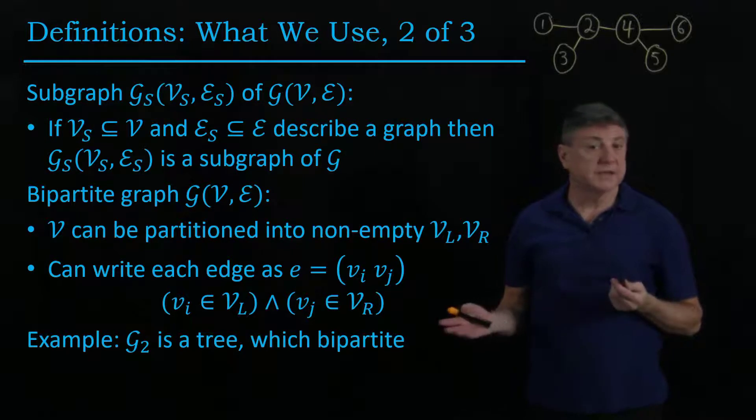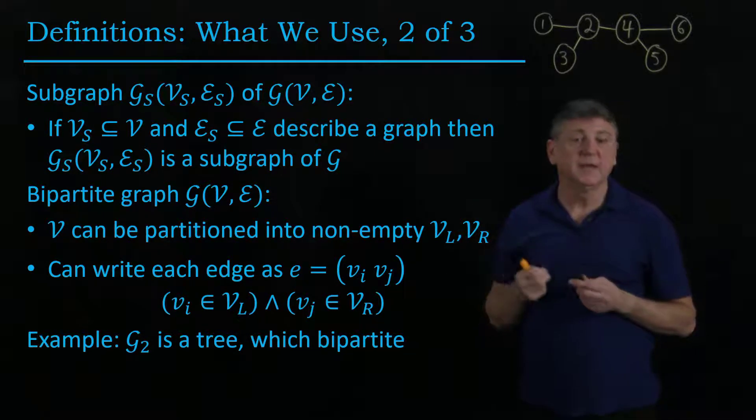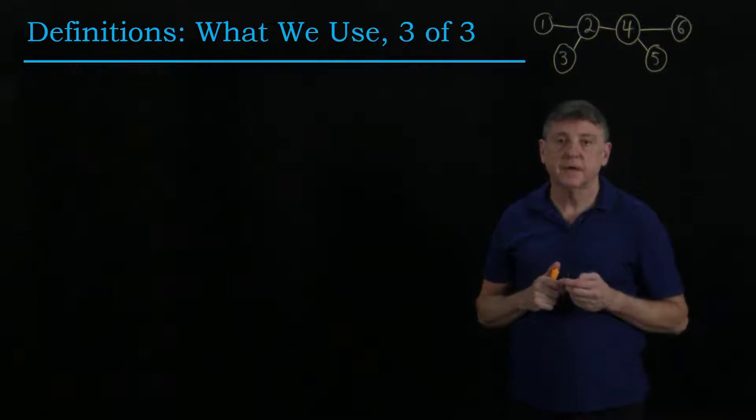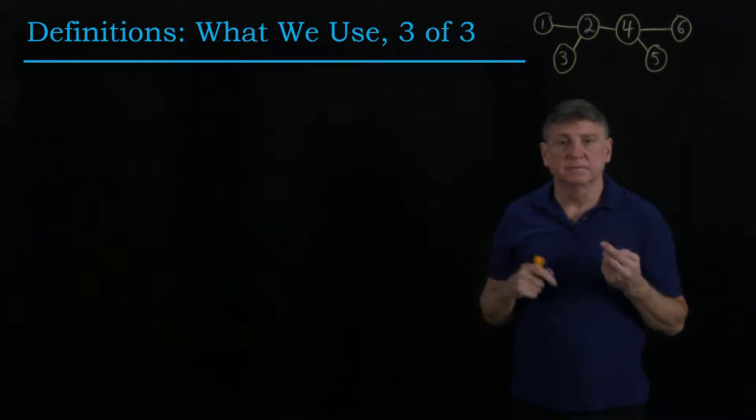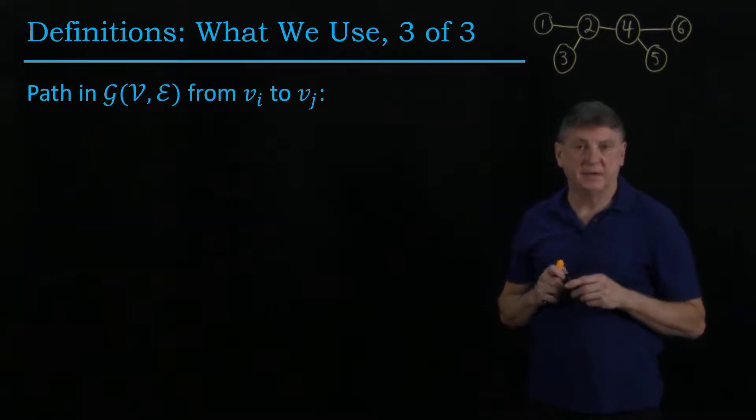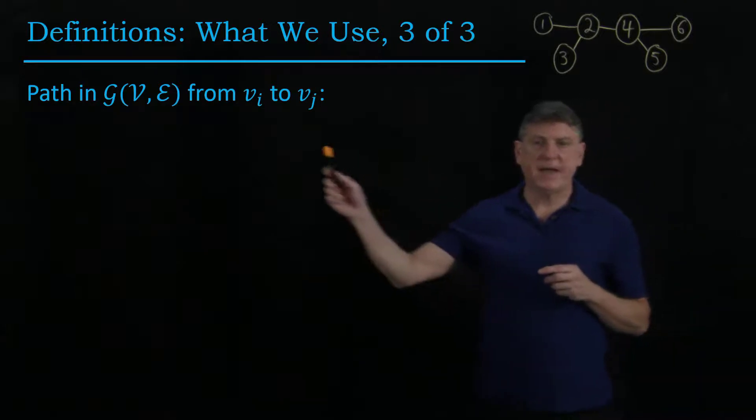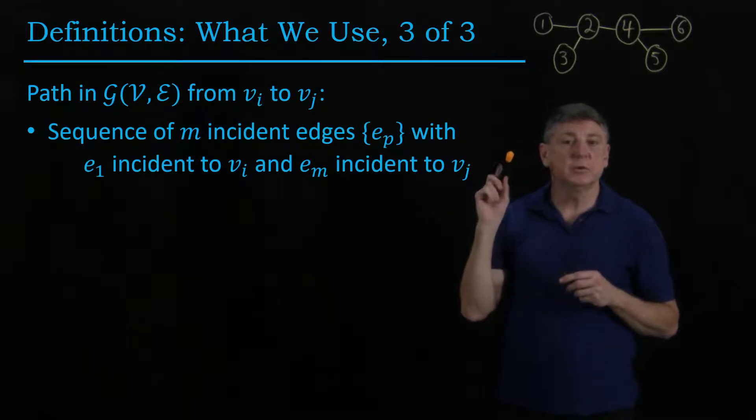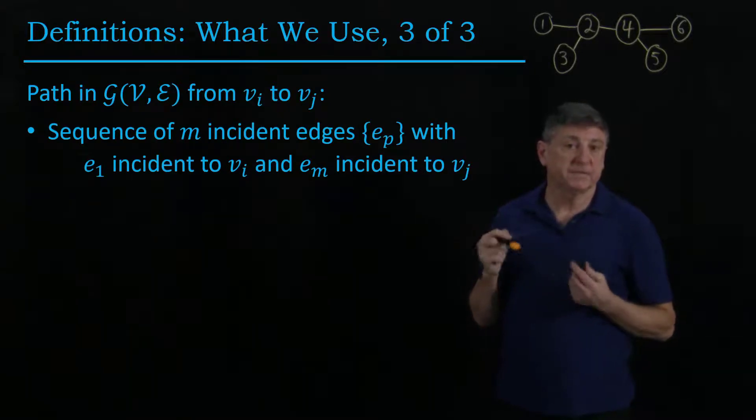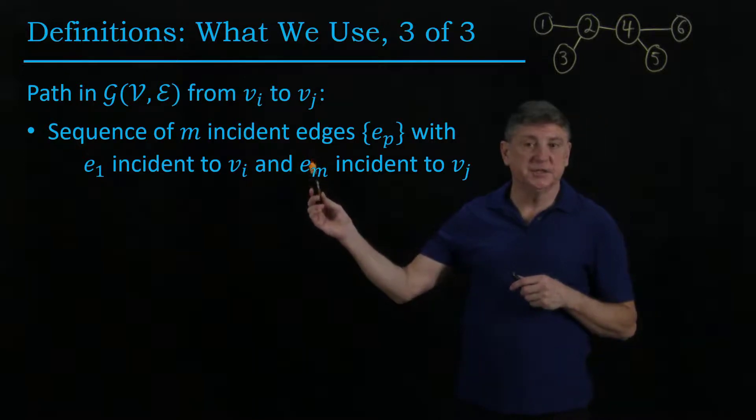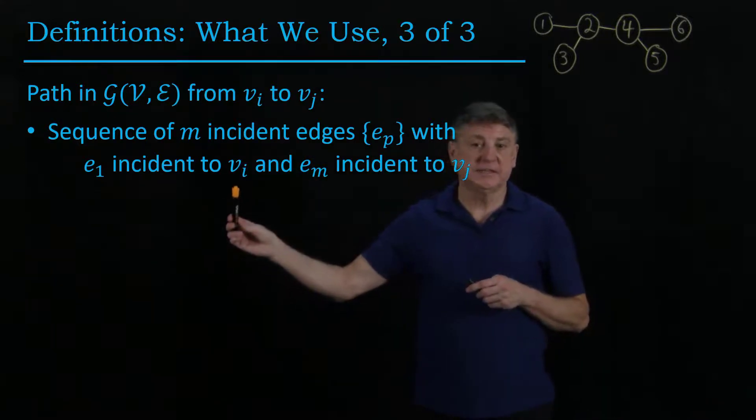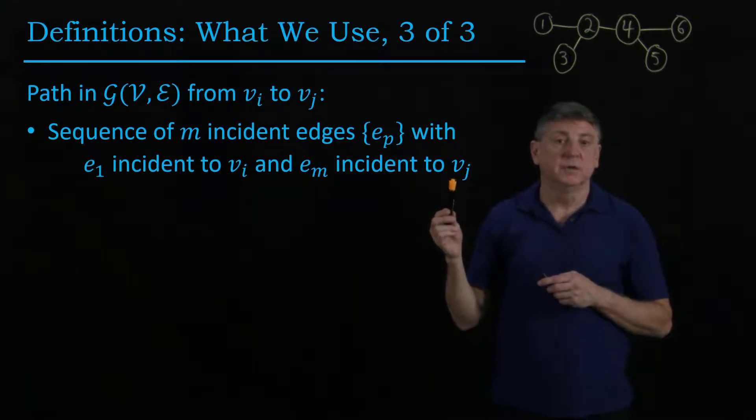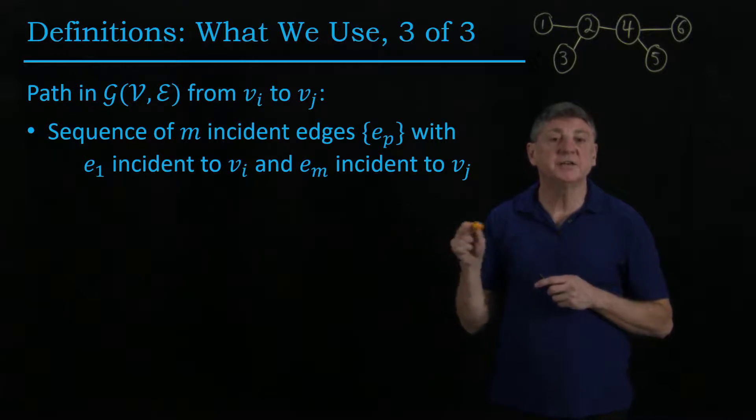So as I said, this particular example happens also to be representable as a tree. Now the next set of definitions that we'll use are the idea of a path. So the idea of a path that starts at vertex i and ends at vertex j is it's a sequence, and we're going to require that it be a finite sequence of incident edges, and the first edge is incident to the starting vertex, and the last edge is incident to the ending vertex, and then the edges are incident to each other.